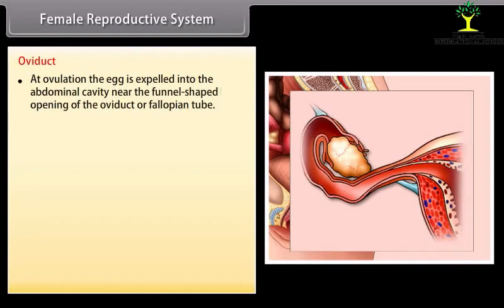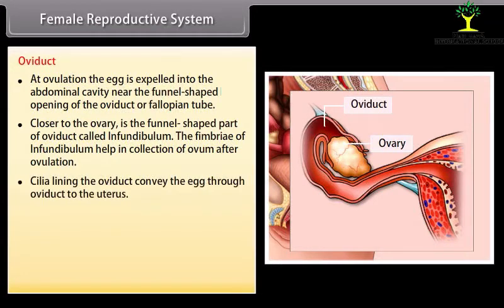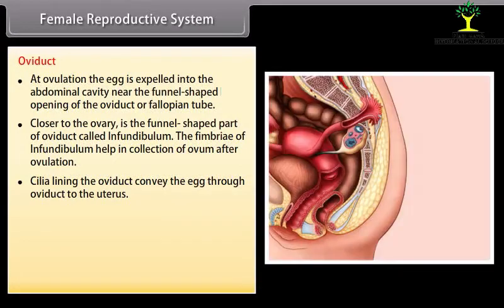At ovulation, the egg is expelled into the abdominal cavity near the funnel-shaped opening of the oviduct, or fallopian tube. Closer to the ovary is the funnel-shaped part called the infundibulum; its fimbriae help in collection of the ovum after ovulation. Cilia lining the oviduct convey the egg through the oviduct to the uterus.